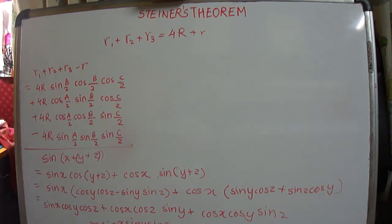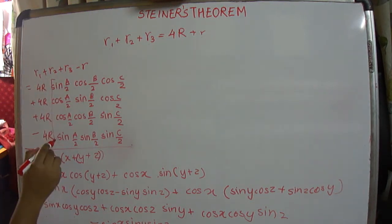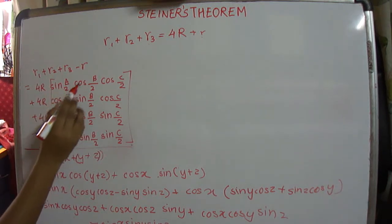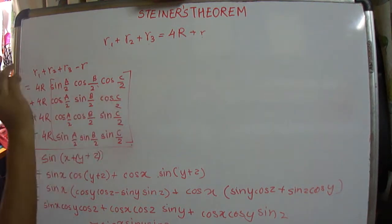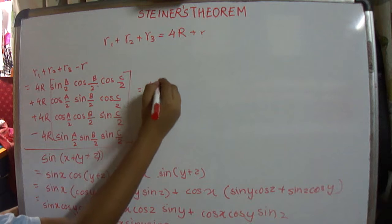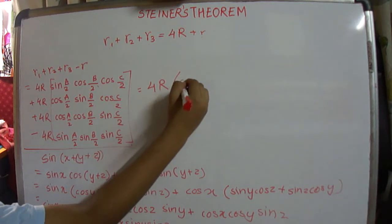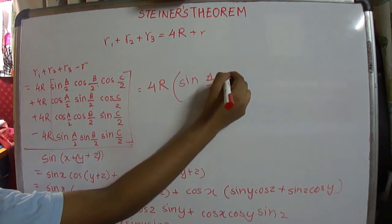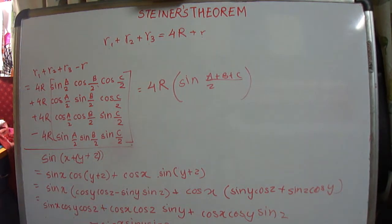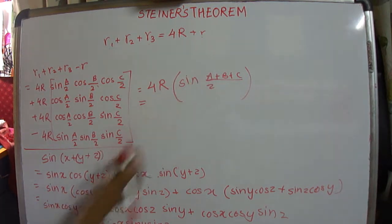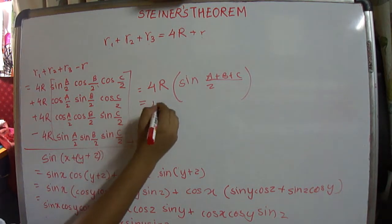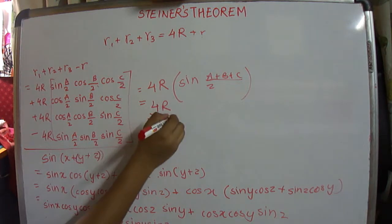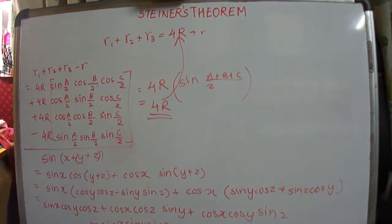Doesn't this look similar? Yes, it does. So we can restate this as sin(A/2 + B/2 + C/2), which can be written as 4R times sin((A+B+C)/2). Since A plus B plus C equals 180 degrees, this becomes 4R times sin(90°). Sin(90°) equals 1, so this becomes 4R. The theorem is proved!